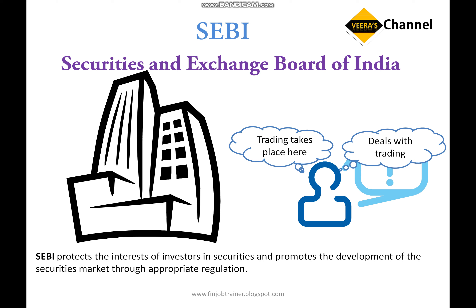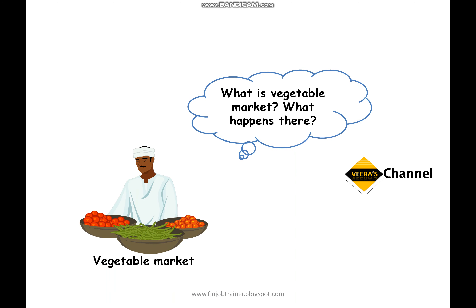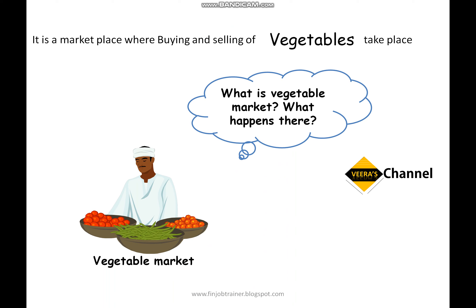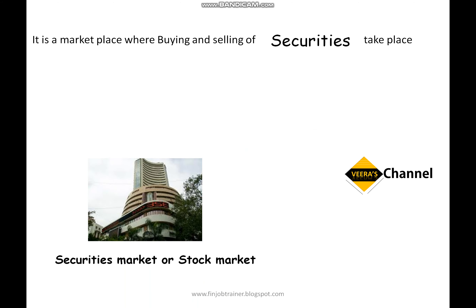Here we have used the term 'Securities Market.' What is a Securities Market? To understand it, let's use the example of a Vegetables Market. A Vegetable Market is a marketplace where buying and selling of vegetables takes place. If you replace 'vegetables' with 'Securities,' it becomes the definition of Securities Market. So, Securities Market is a marketplace where buying and selling of Securities takes place. In a vegetable market the commodities are vegetables; here, the commodities being bought and sold are Securities.